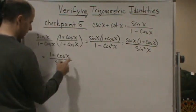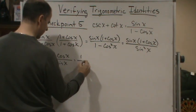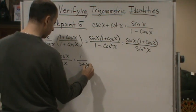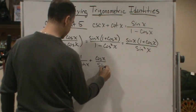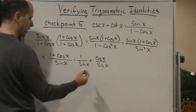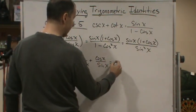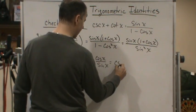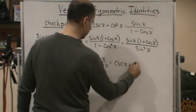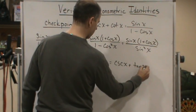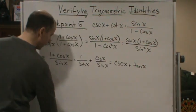I can split this up into two fractions and I get 1 over sine x plus cosine x over sine x. And now I'm finished because 1 over sine x gives me my cosecant x plus cosine over sine gives me cotangent x.